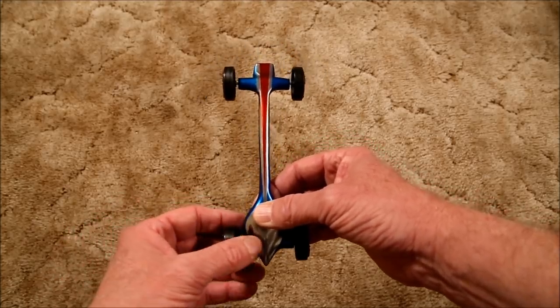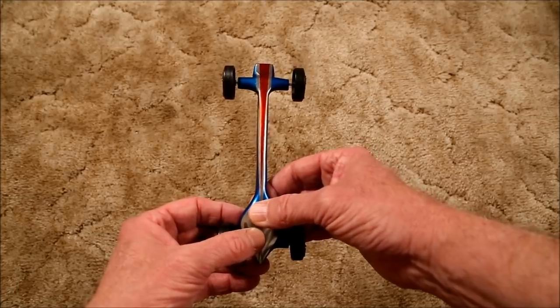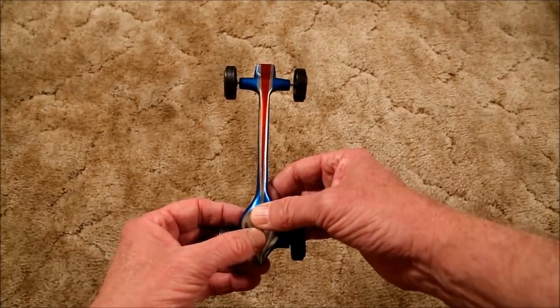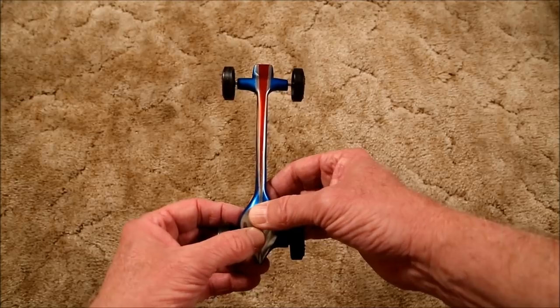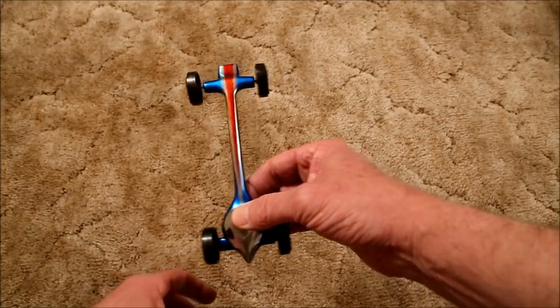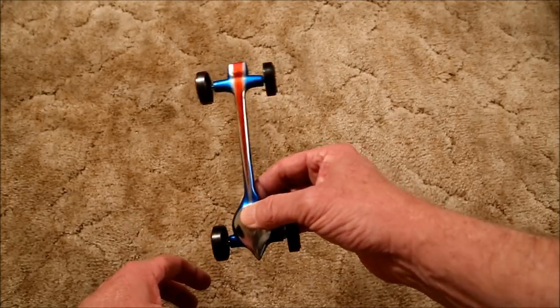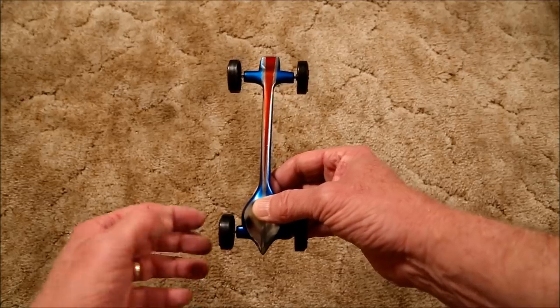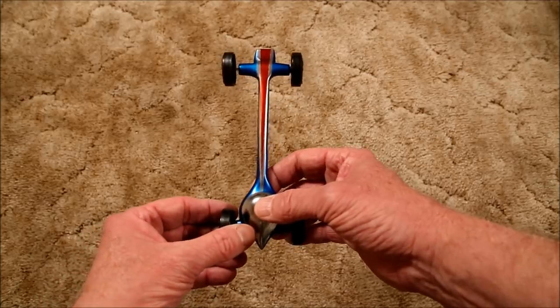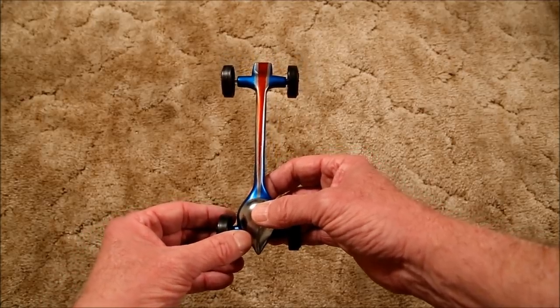The idea is that the amount of drag it experiences by running against the rail is less than the amount of energy lost as the car wiggles as in a straight runner car. Rail runner cars are faster than straight runner cars.